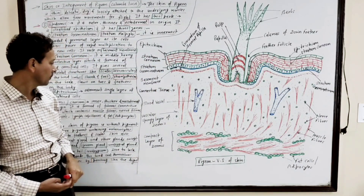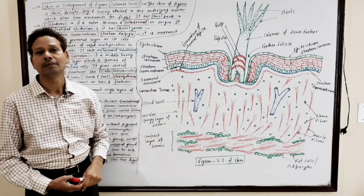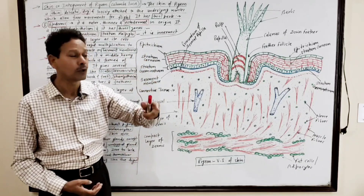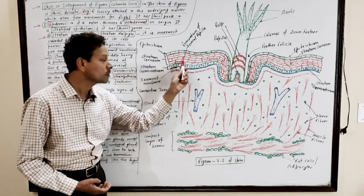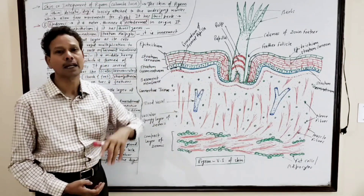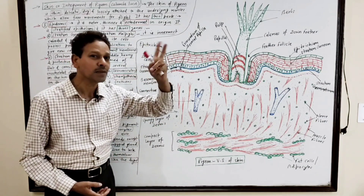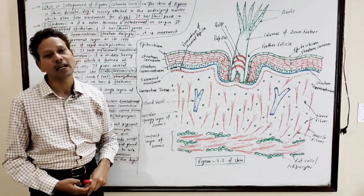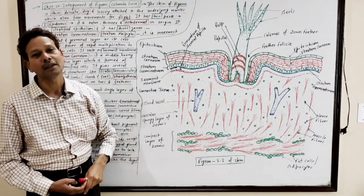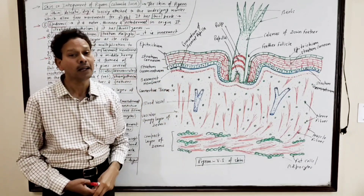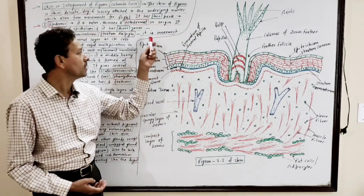The stratum corneum also gives rise to feathers. The third and outermost zone is the epitriceum, which is a thin layer of flat cells. So in summary, the epidermis has three zones: the innermost stratum germinativum, the middle stratum corneum with cornified cells giving rise to exoskeletal structures, and the outermost epitriceum.